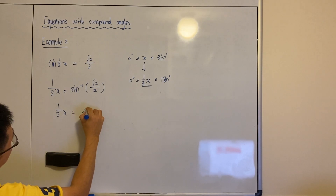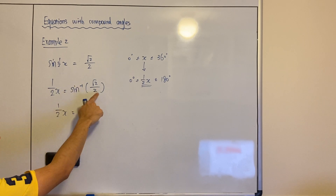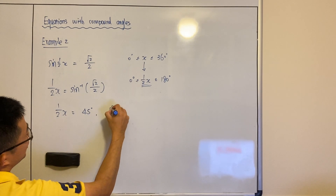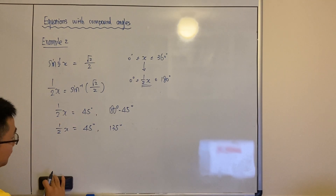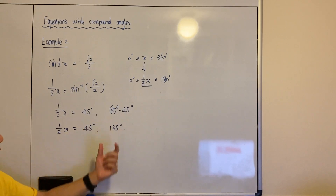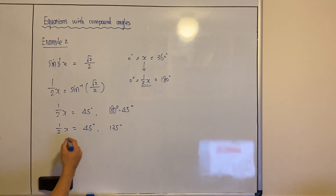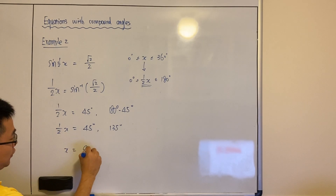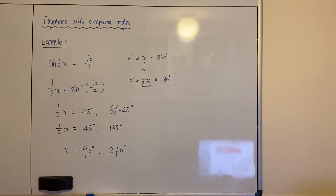So half x equals sin inverse of root 2 over 2, which is 45 degrees. Now we need to find all answers between 0 and 180. The second angle, since this is sine, is 180 minus 45, which gives 135 degrees. Both 45 and 135 are less than 180, so those are our answers. No need to add 360 — that would exceed 180. Once finished, multiply everything by 2. So 45 times 2 is 90 degrees, and 135 times 2 is 270 degrees. Those are the final answers.